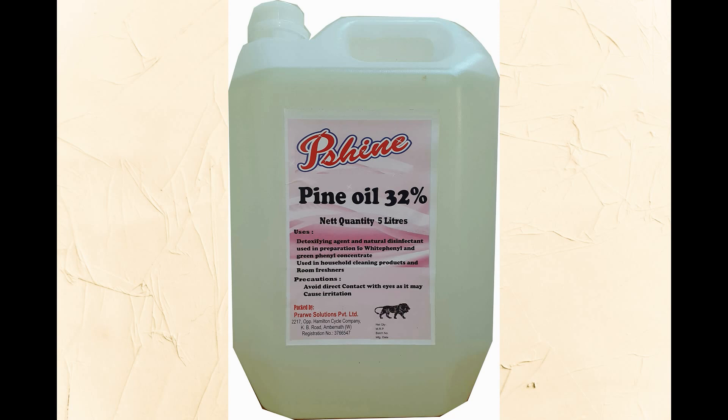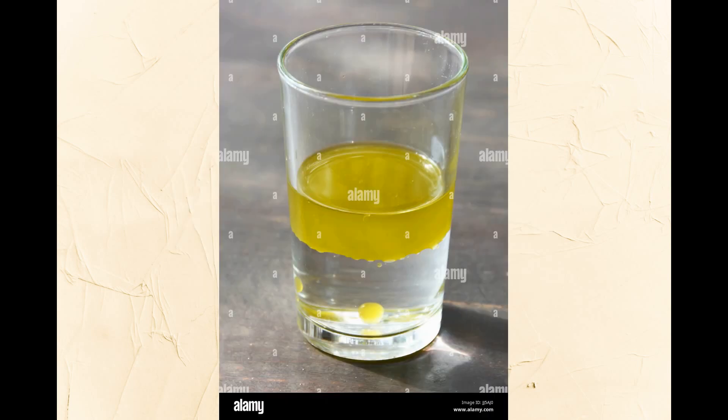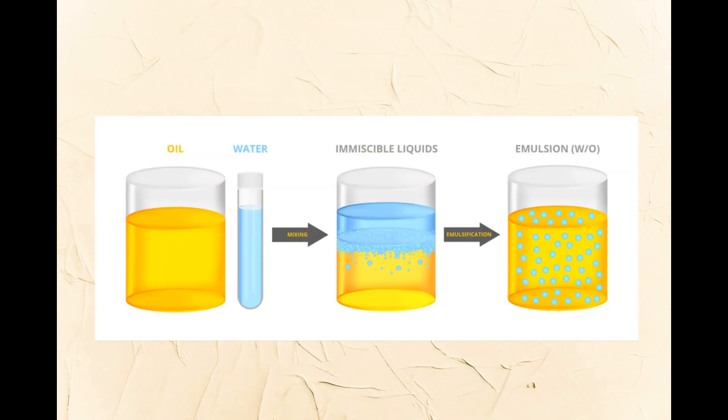We know pine oil is a very good disinfectant, but it is not necessary to use concentrated pine oil. Generally 25 to 30 ml of pine oil in one liter of water — this dilution is capable of killing all the microorganisms. Since oil will not mix with water — they are immiscible — we use an emulsifier to achieve the process of mixing pine oil in water.